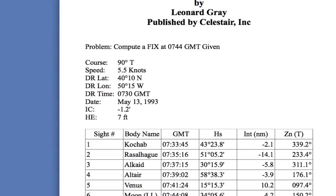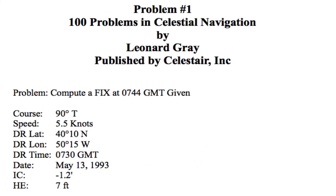The first problem in the book basically requires you to compute a fix on May the 13th of 1993 at 0744 GMT, given that you're on a vessel on a course of 90 degrees true, running at a speed of 5.5 knots, with a DR lat and lon as dictated in the problem, a DR time of 7:30 GMT, and an index correction of minus 1.2 minutes.